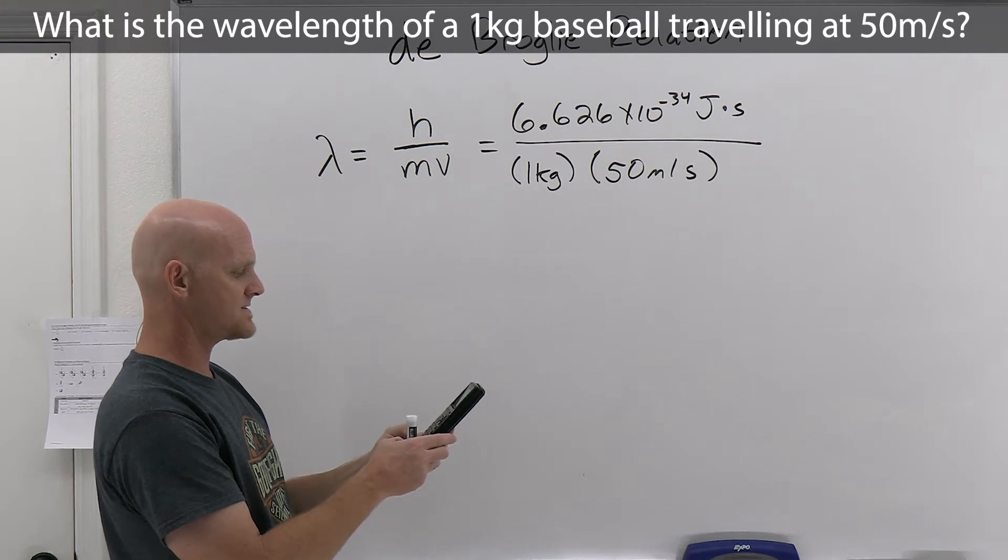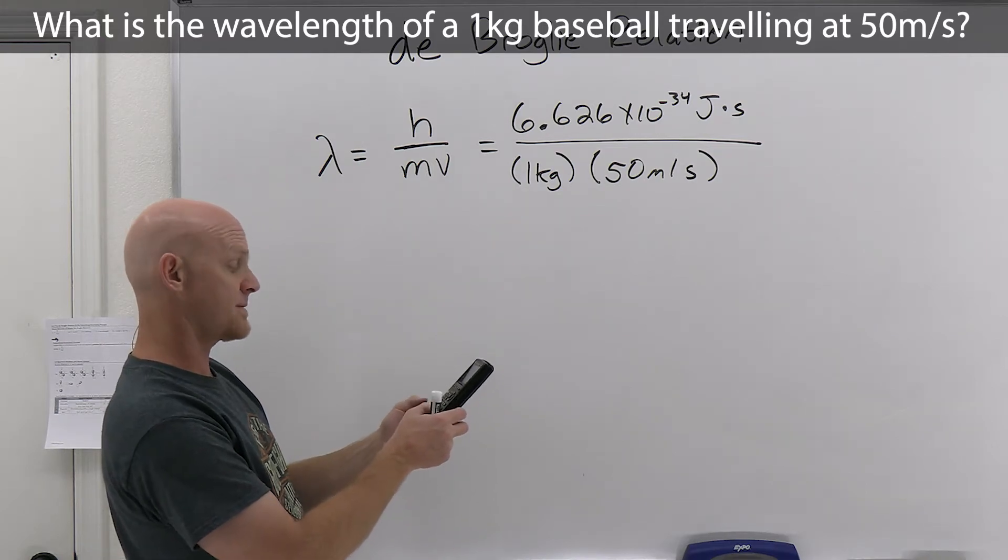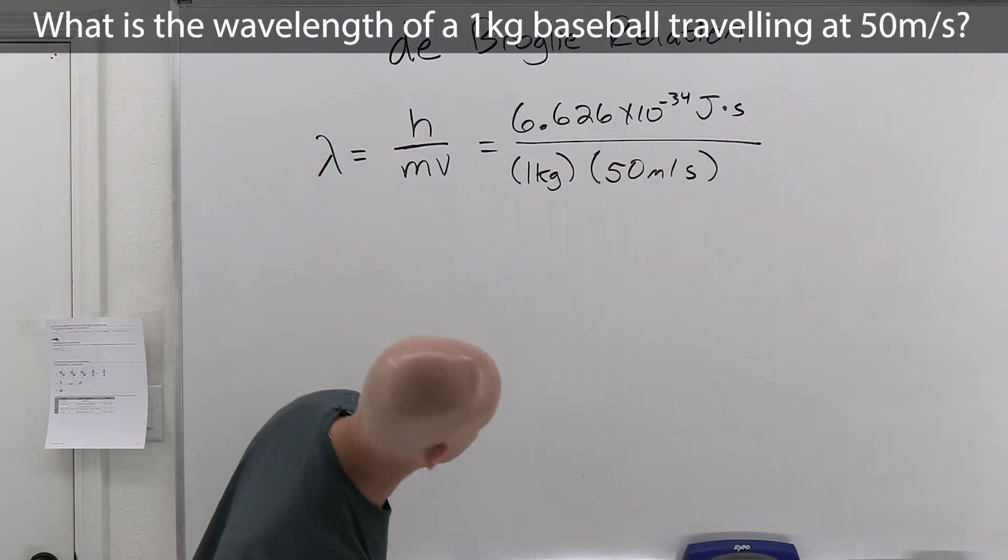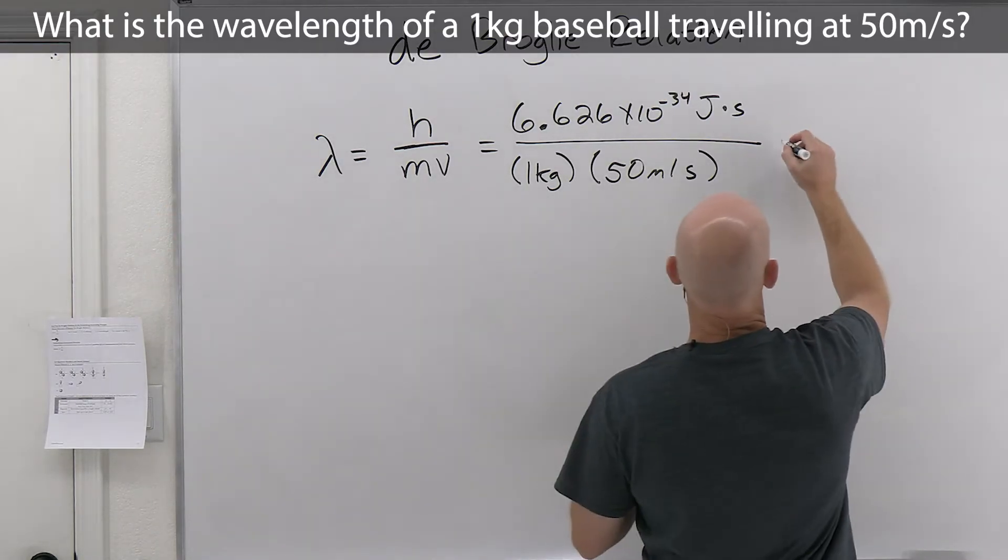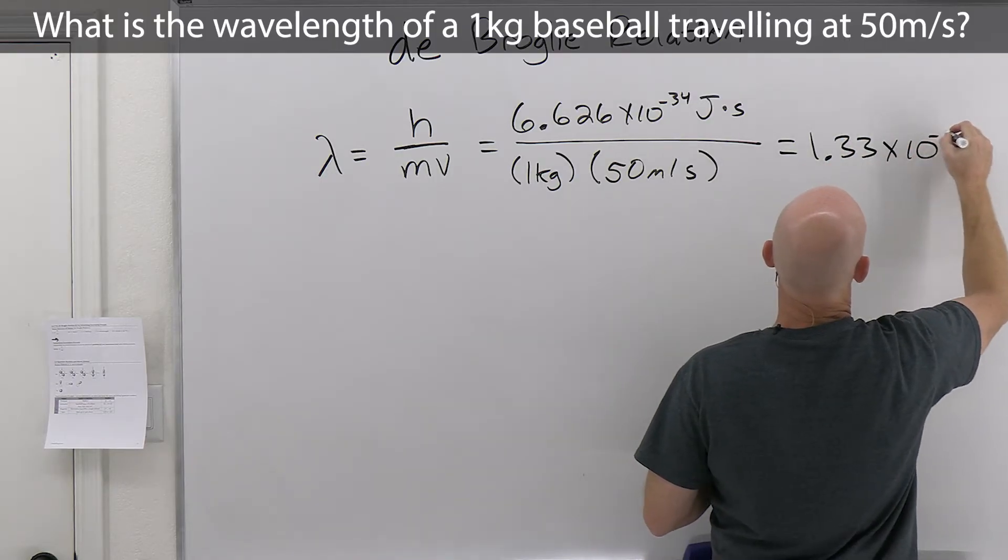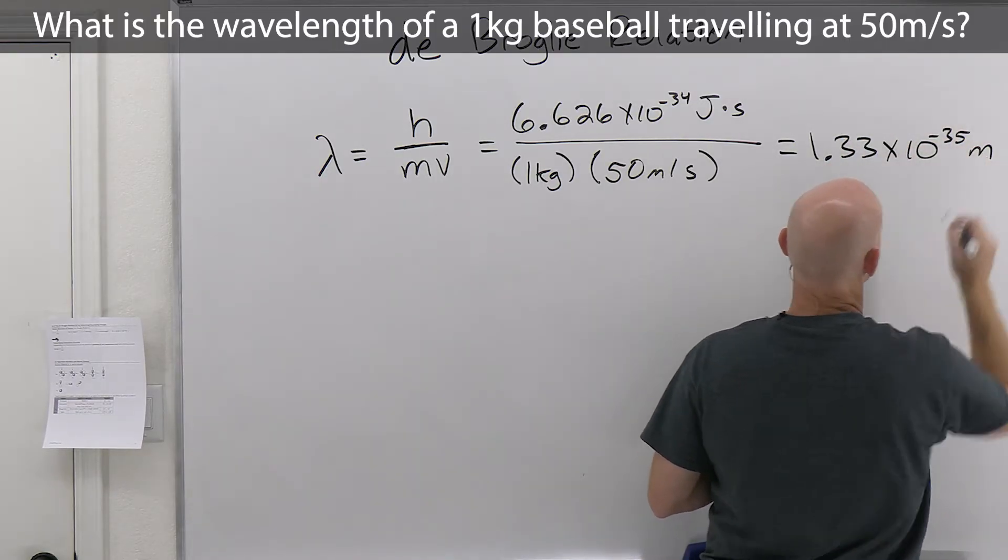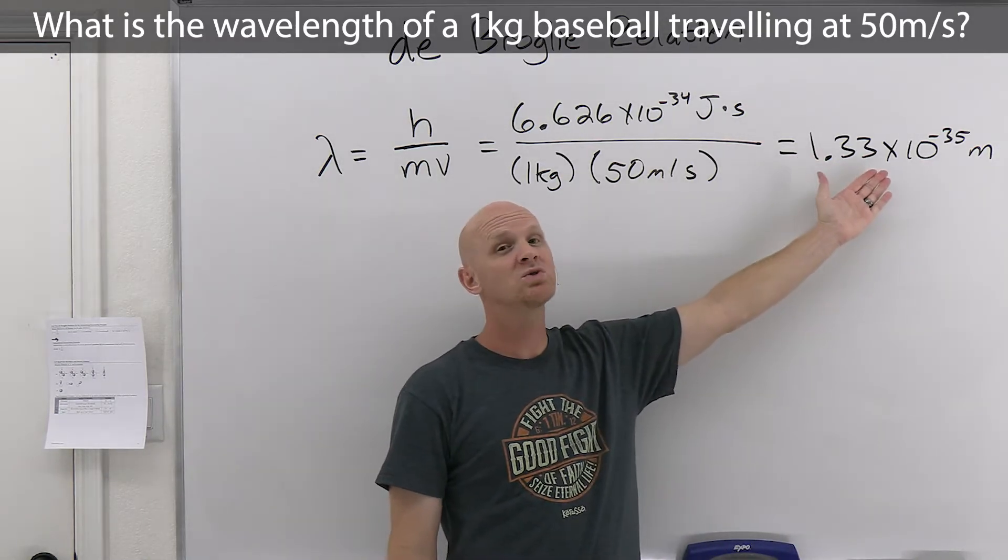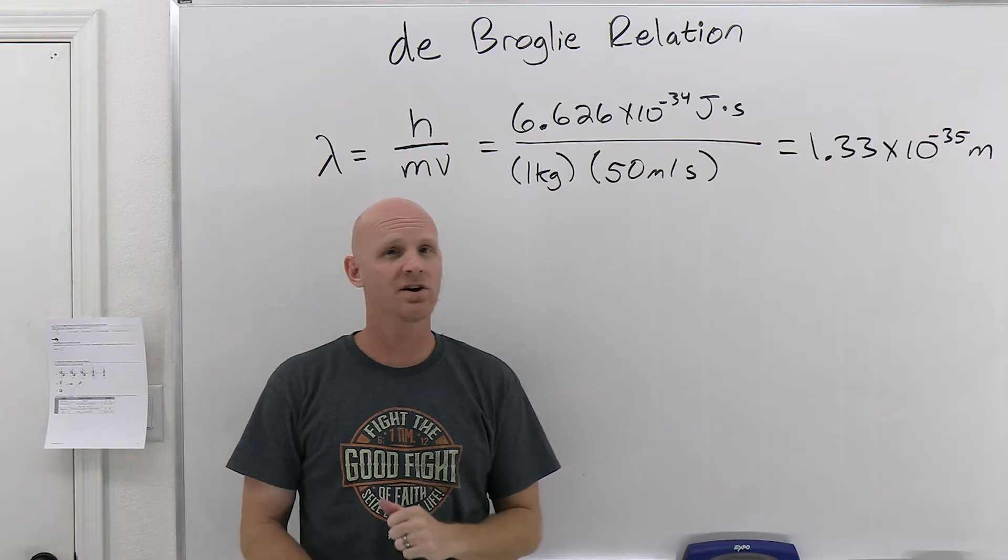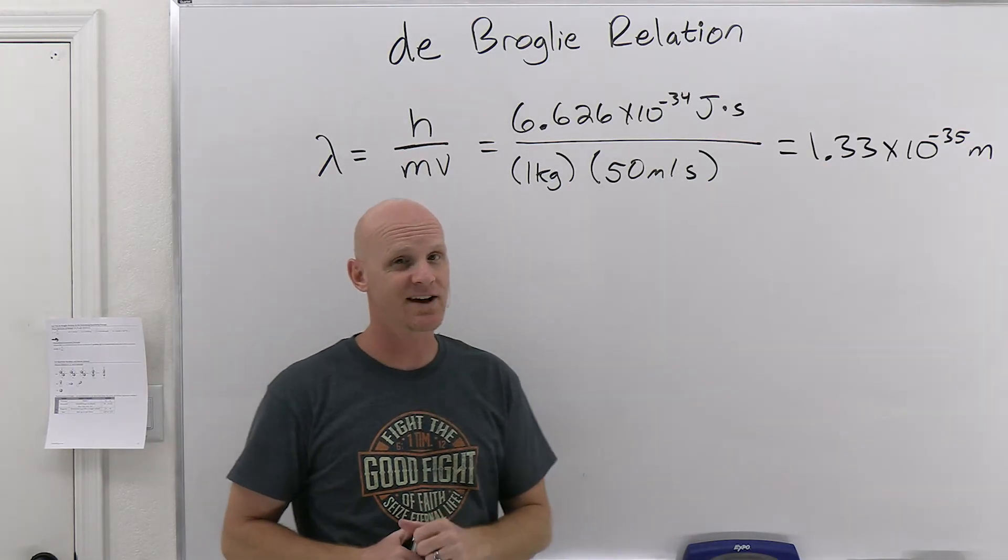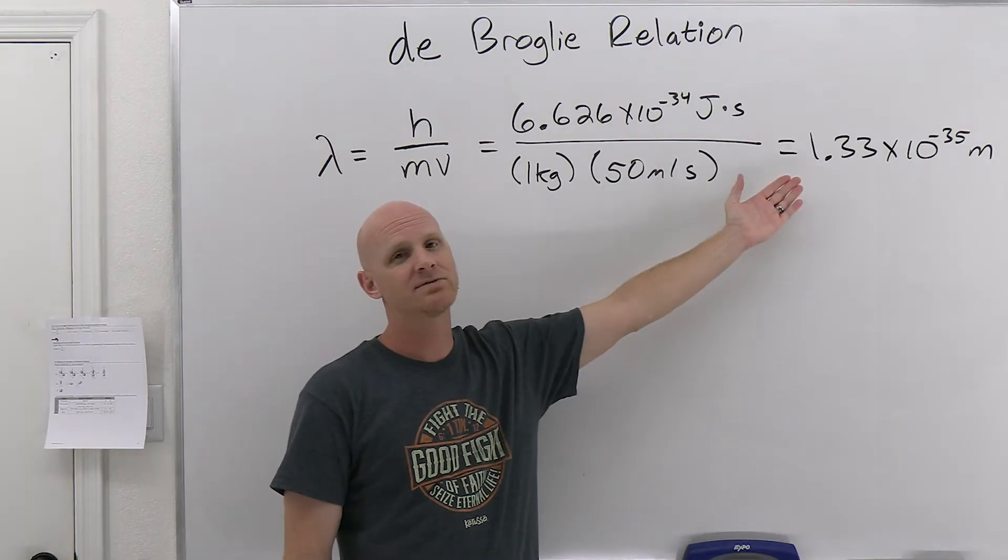So 6.626 times 10 to the negative 34 divided by 1 and divided by 50 gets us a wavelength of 1.33 times 10 to the negative 35 meters. And this is the problem we have. This is so small that we don't have anything on planet Earth that could measure a wavelength this small. Your eyes definitely can't detect it for sure.